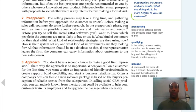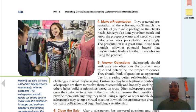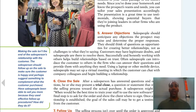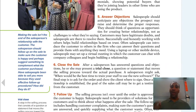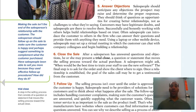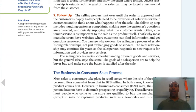A prospect is a person with the means to buy a product, the authority to buy, and the willingness to listen to the sales message. If you're selling a copier and you're talking to an administrative assistant or secretary, they don't have the authority to purchase — so you make sure you have the right prospect. Then comes the approach, the actual presentation, answering objections, and closing the sale. As they say in sales: ABC — Always Be Closing. Then follow up: the process isn't over until the order is approved and the customer is happy.